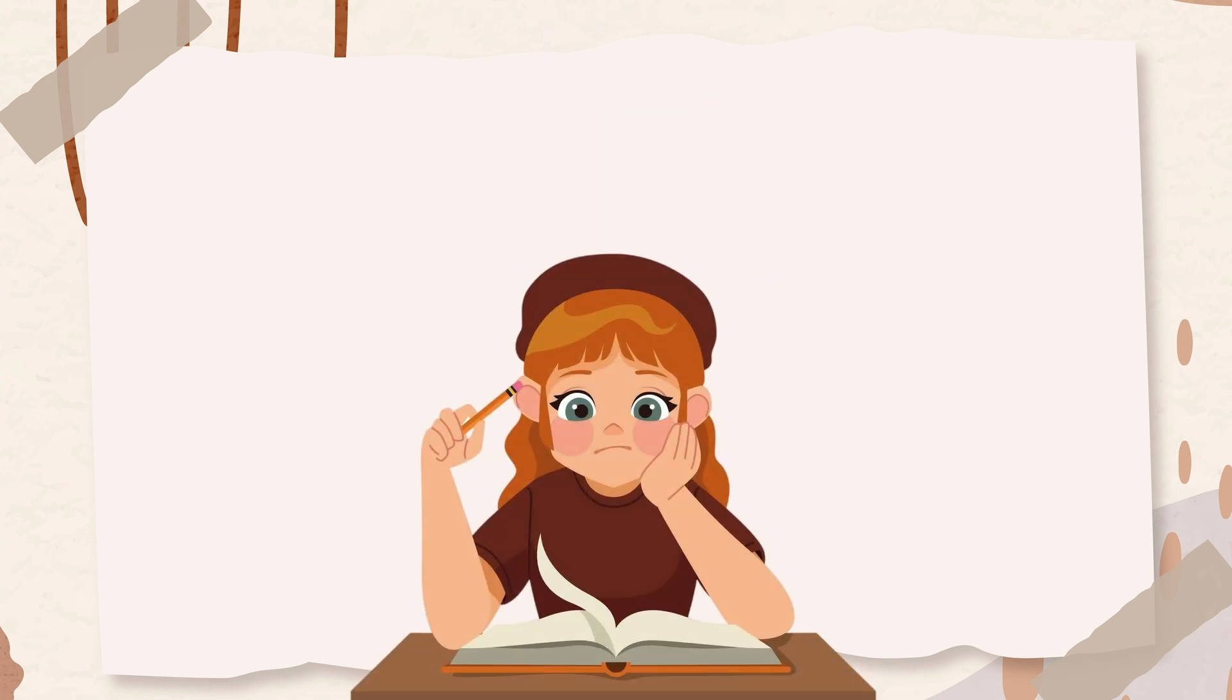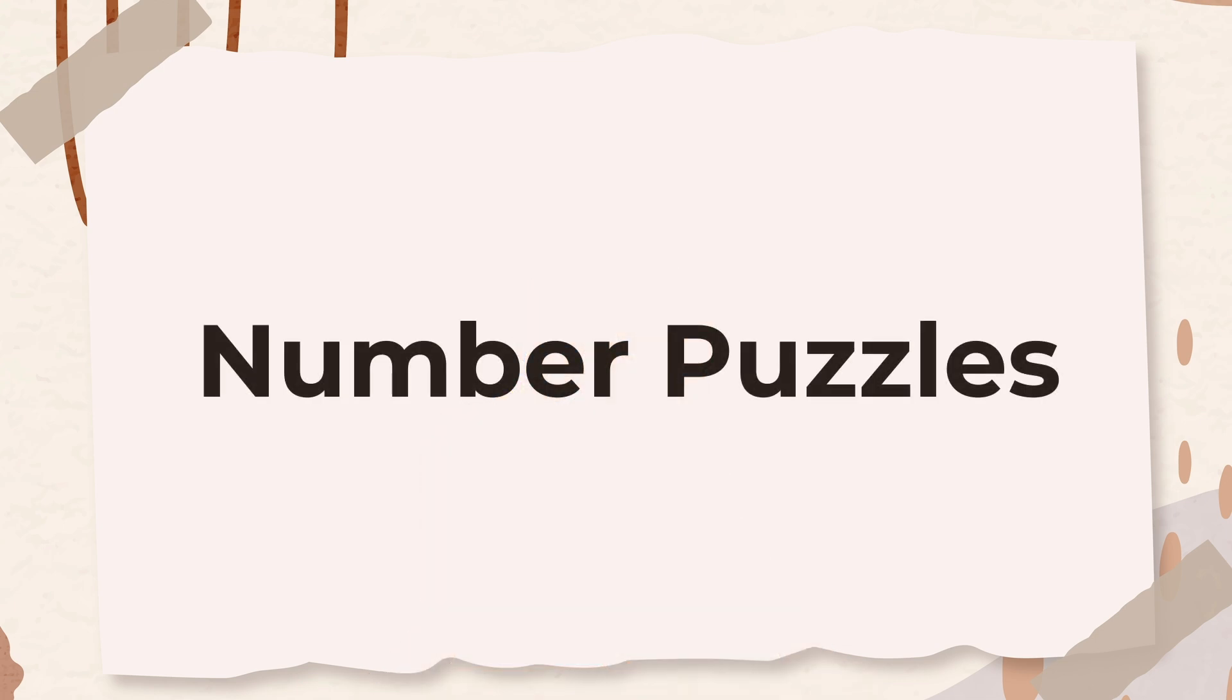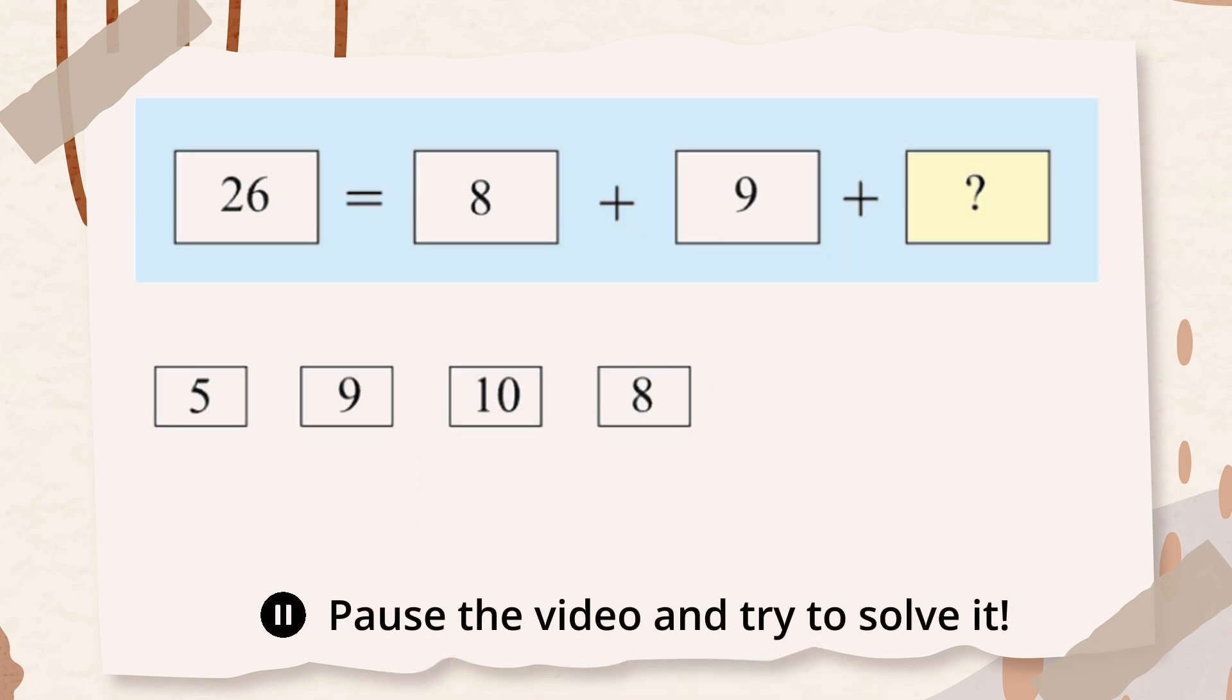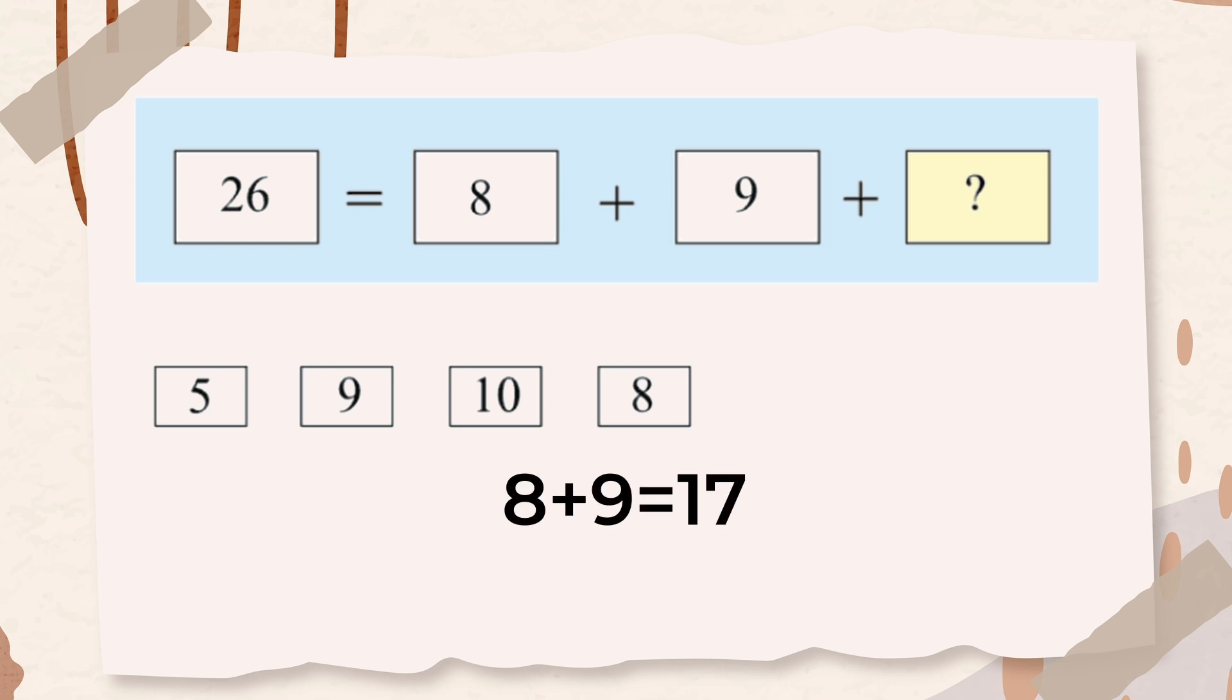The final subtest in this battery is number puzzles. In this question, you are given an equation with a missing number. You must solve the equation to determine what number is missing. First, add nine to eight, which equals 17. Then, to find the missing value, subtract 17 from 26. So, the correct answer is nine.